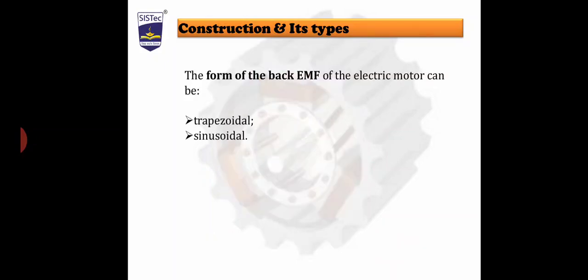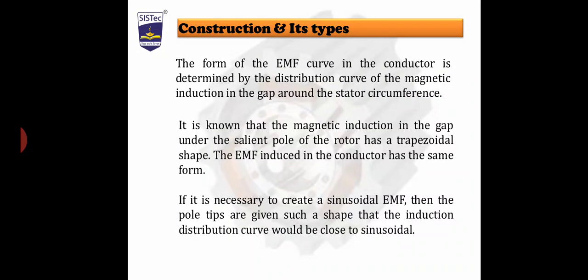The form of back EMF of the electrical motor can be trapezoidal as well as sinusoidal. The form of the EMF curve in the conductor is determined by the distribution curve of the magnetic induction in the gap around the stator circumference. The magnetic induction in the gap under the salient pole of the stator has a trapezoidal shape, so the EMF induced in the conductor has the same form. If it is necessary to create a sinusoidal EMF, then the pole shapes are designed so that the induction distribution curve is close to sinusoidal.